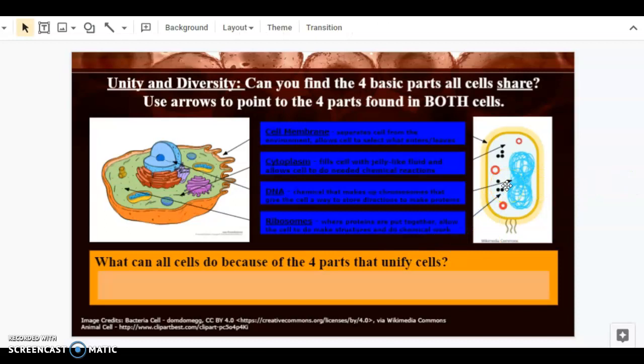So the four things that all cells have, whether it is a eukaryotic cell like this one or a prokaryotic cell like this one, is the cell membrane, cytoplasm, DNA, and ribosomes.